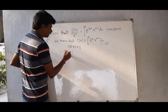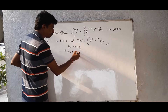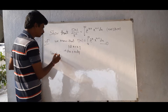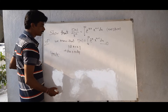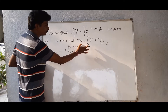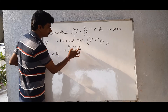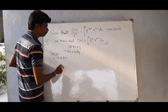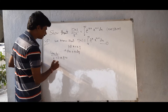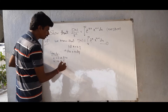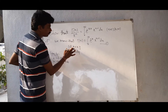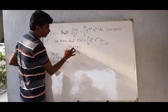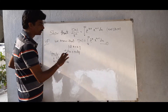That implies dx equal to k into dy. Now we check the limits: when x equal to 0, then y equal to 0 also; when x equal to infinity, y equal to infinity also. So the limits do not change.